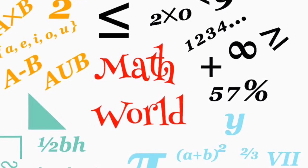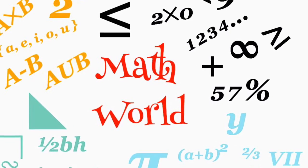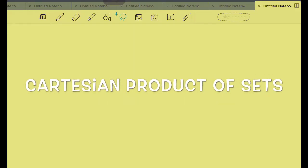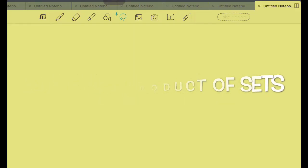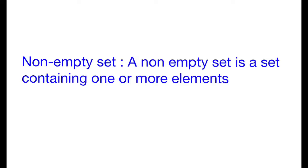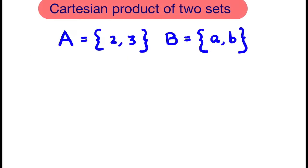Welcome to Math World. Today let us learn about Cartesian product of sets. Consider two non-empty sets A and B. A non-empty set is a set containing one or more elements. Elements of set A are 2 and 3, and elements of set B are A and B.